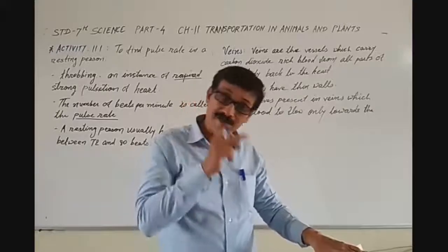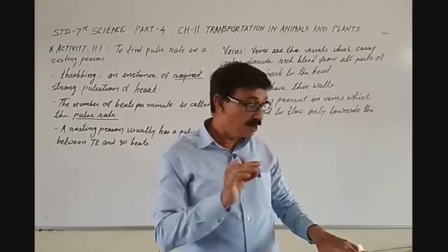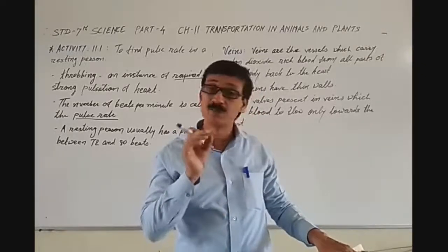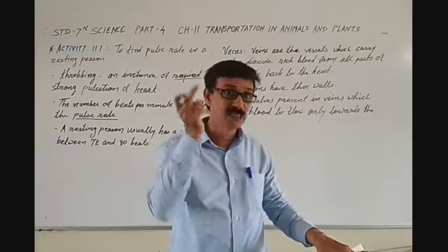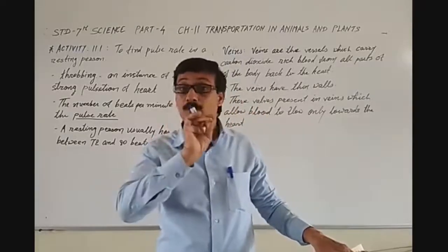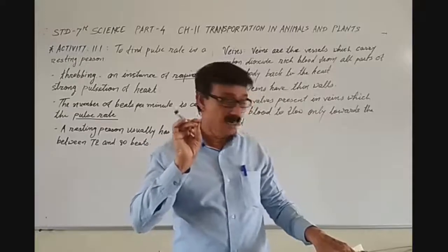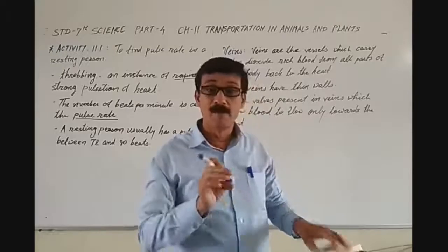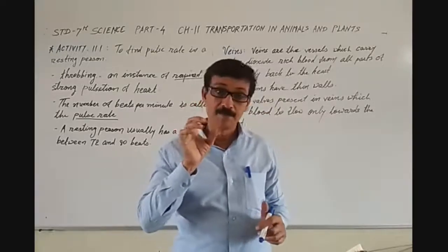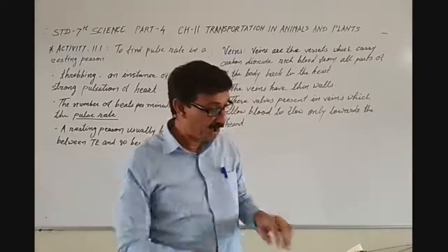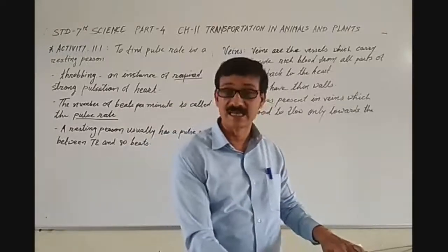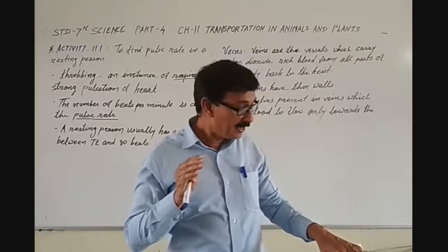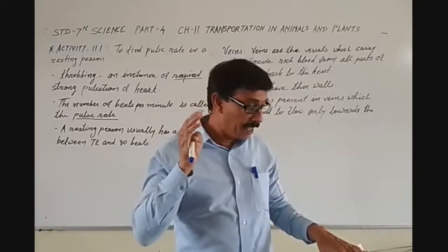Previously we discussed that since the blood flow is rapid and at high pressure, the arteries have thick elastic walls. As there is high pressure in the arteries and the heart is beating, that is why you will find pulses there. This throbbing is called the pulse, and it is due to the blood flowing in the arteries.